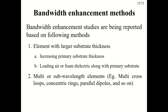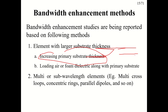Bandwidth enhancement methods include: using a thick substrate, which can be achieved either by using a single thick substrate (more costly) or by using a Rogers or other standard substrate with the remaining thickness filled with foam or air gap. A second approach is designing wideband element geometries that inherently offer wider bandwidth, such as multi-cross rings, parallel dipoles, and concentric rings.